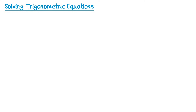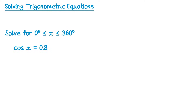Let's imagine we were going to solve for x values between 0 and 360 degrees an equation which says cos x equals 0.8. Based on your knowledge from GCSE Maths, you should already know that you could inverse cos both sides, getting x equals inverse cos of 0.8. You can type this into your calculator and it will give you x equals 36.9 degrees, rounded to one decimal place. That is one solution, but it isn't the only solution.